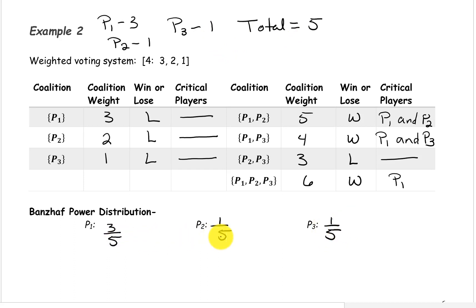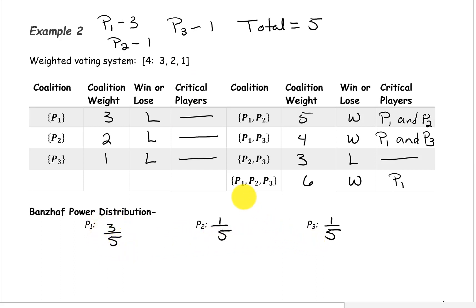One thing to notice about this example is that all of these players have nearly the same weights — 3, 2, and 1 — but their power is very different. Player 1 has a lot more power than players 2 and 3. That is all for this video. Let me know if you have any questions, and I hope you're having a wonderful day.